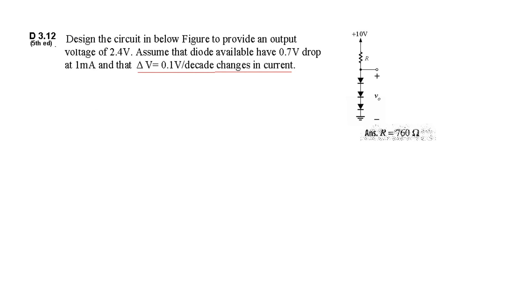Design the circuit to provide an output of 2.4 volt. Assume that the diode available is 0.7 volt drop at 1 mA, and delta V is 0.1 volt per decade. The first thing we can see from the circuit is that to get 2.4 volt output, each diode must drop 2.4 divided by 3, that is 0.8 volt.